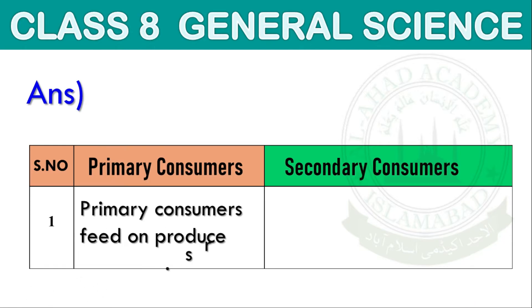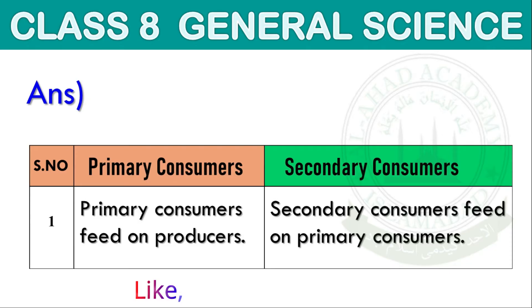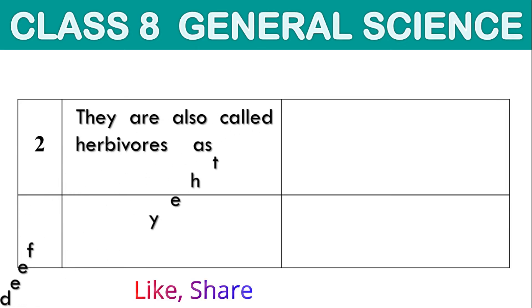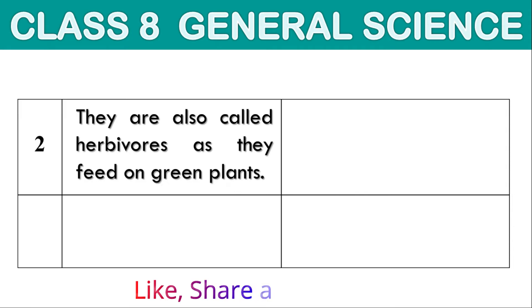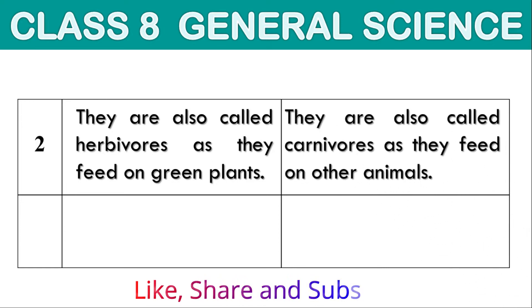Primary consumers feed on producers. They are also called herbivores, as they feed on green plants. Secondary consumers feed on primary consumers. They are also called carnivores, as they feed on other animals.